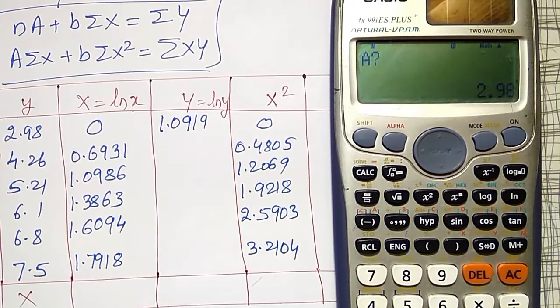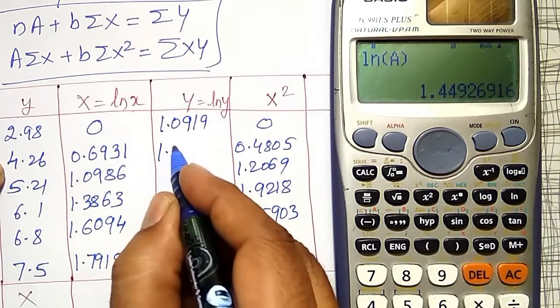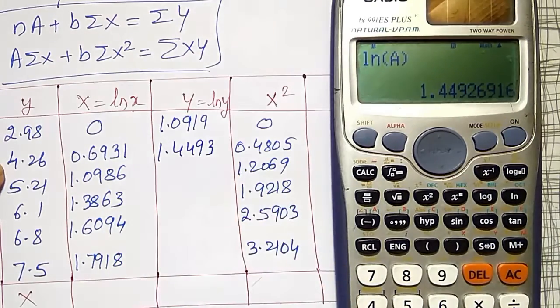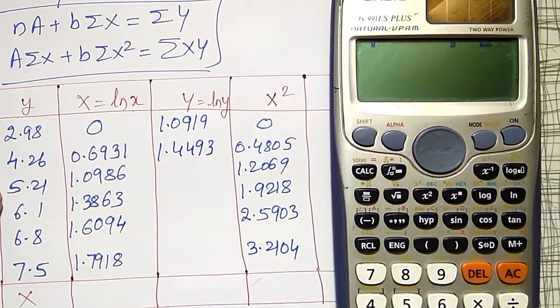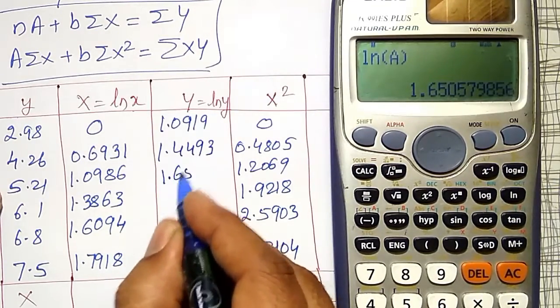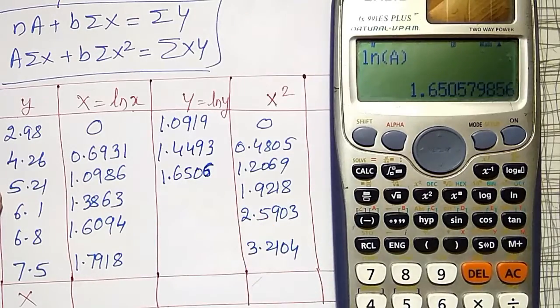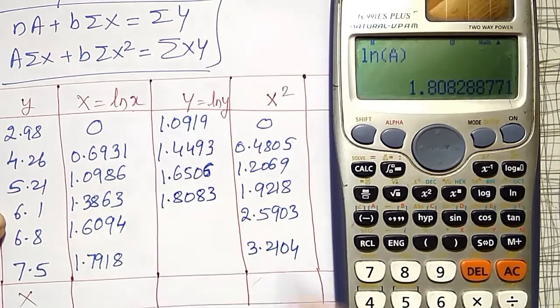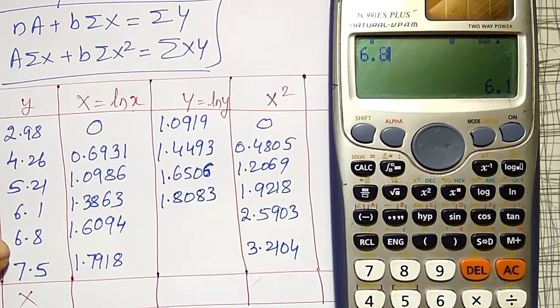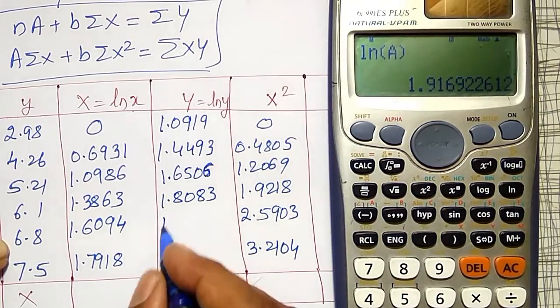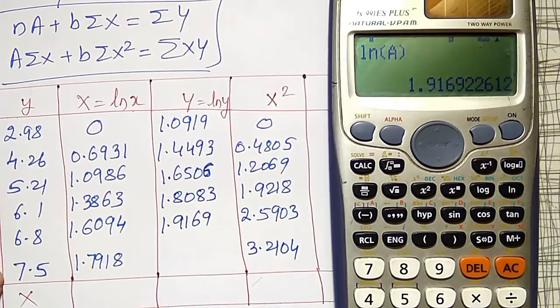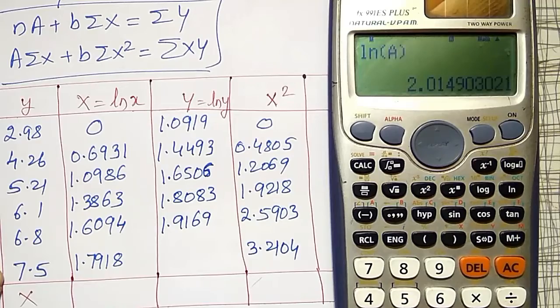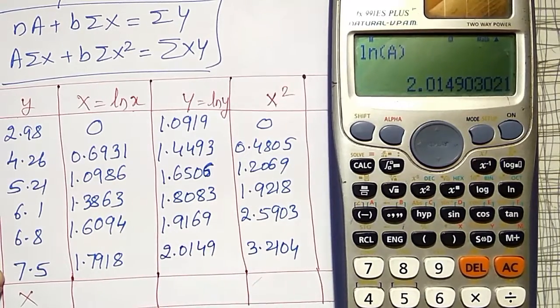Next, equal to a, a value is 4.26, I will get 1.4493. Equal to 5.21, and it comes out to 1.6508. Next, equal to a, 6.1, that is 1.8083. Equal to 6.8, I have to use, and I will get it as 1.9169. Equal to 7.5, and it is 2.0149.